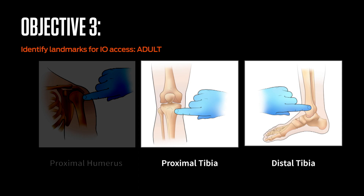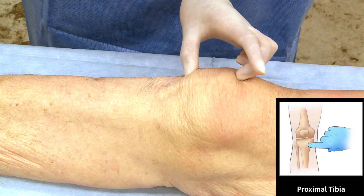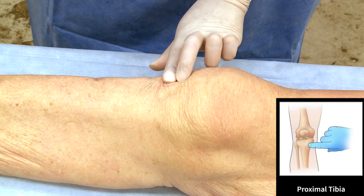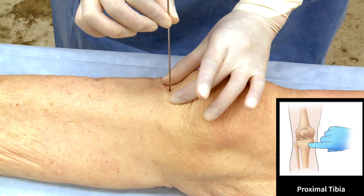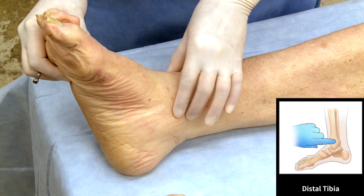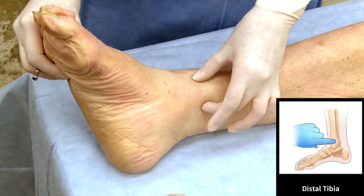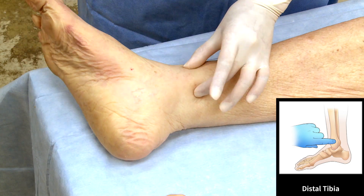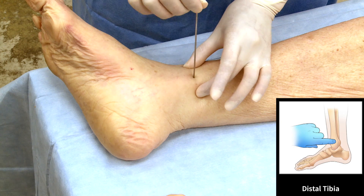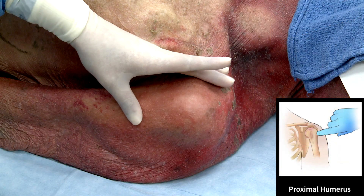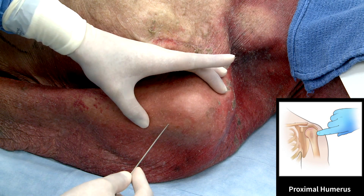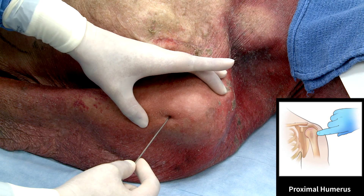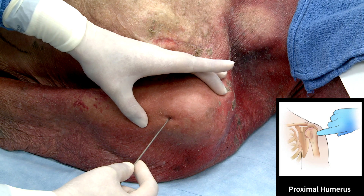This slide illustrates the adult proximal and distal tibial access sites. Note that each site of the adult tibia is located medially and approximately 2 to 3 centimeters from the adjacent joint. Looking at the adult proximal humeral site, we note that it is located laterally and approximately 2 to 3 centimeters from the adjacent joint.